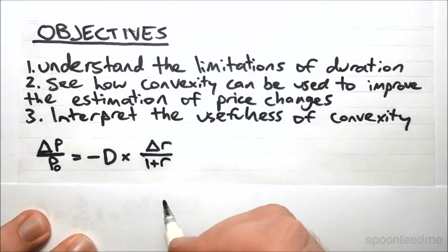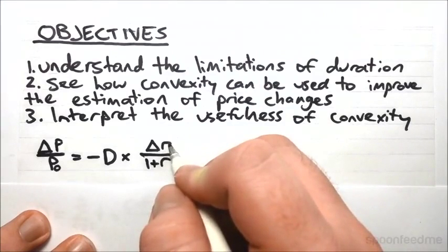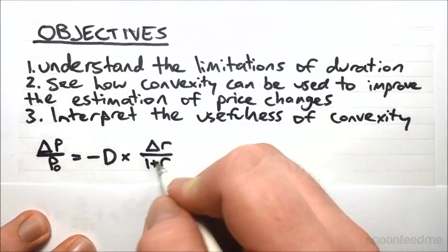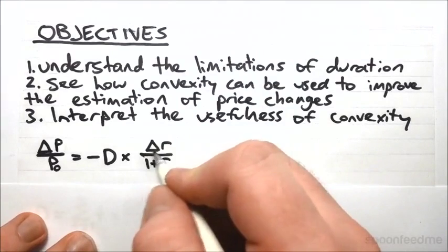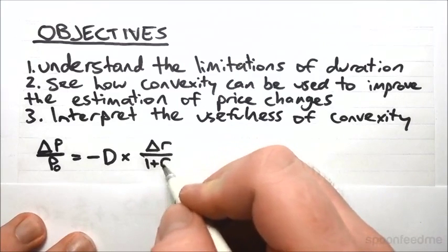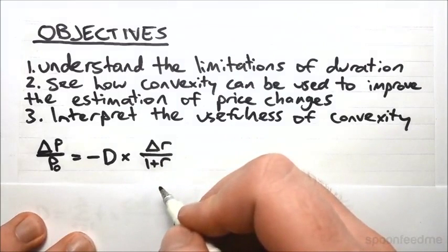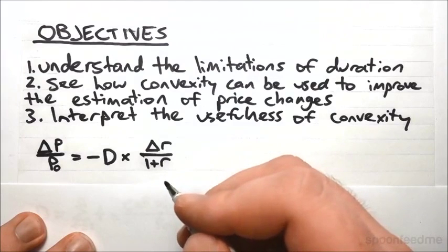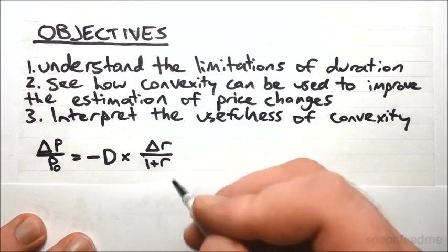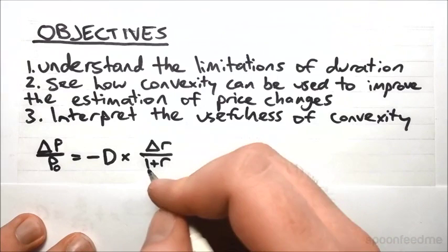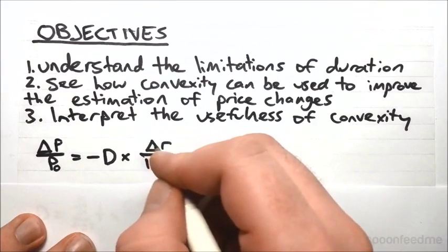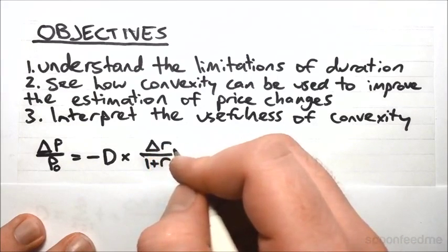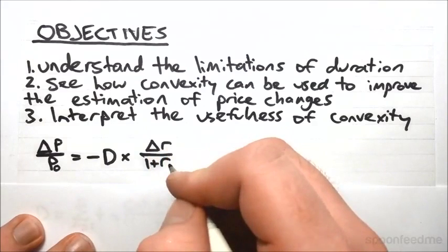And just take note, I've got ΔR here as opposed to Δ(1+R) here, because the change in the yield is exactly the same as the change in 1 plus the yield. If the yield goes from 4% to 5%, then it doesn't matter if I'm taking the difference between 0.04 and 0.05, or 1.04 and 1.05, it's still 1%. So this is equivalent to saying the change in 1 plus R. But we like to use change in R, it's just a bit nicer.